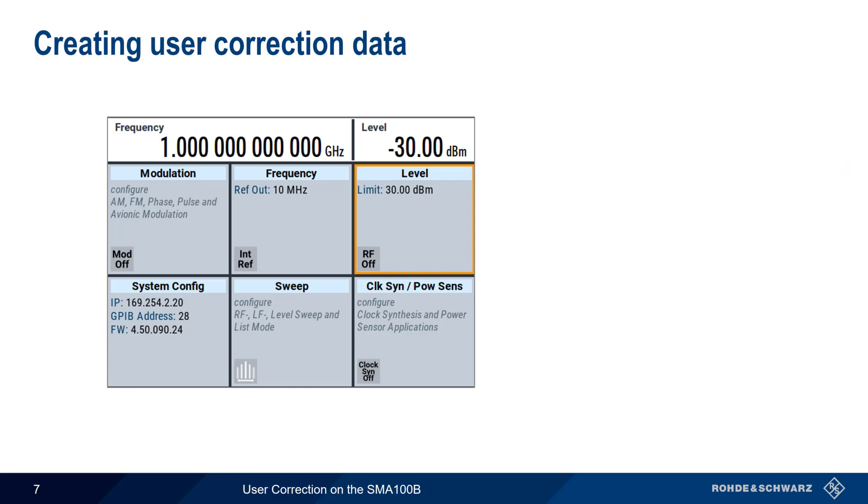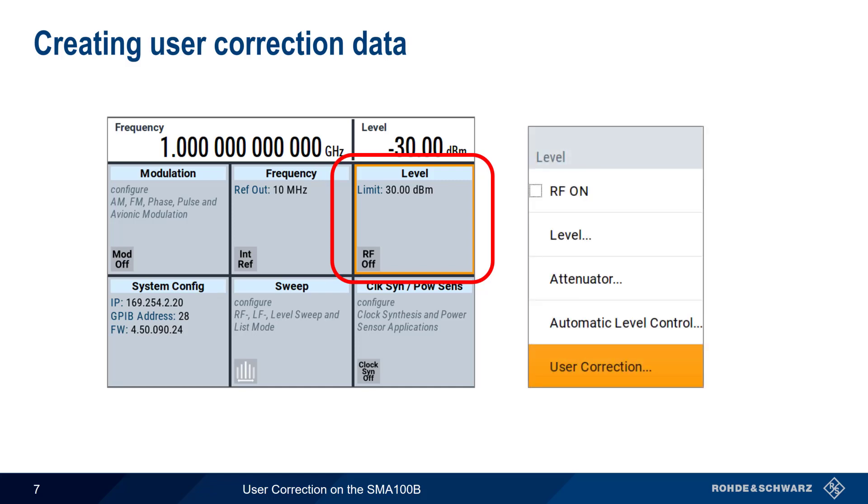The first step is creating the user correction data. We're going to assume that at least one NRP power sensor is connected, mapped, and ready for operation. We'll start by creating a new user data correction file by first clicking on Level in the main SMA100B GUI and then selecting User Correction.